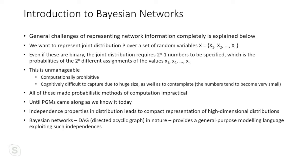The probabilities in a joint distribution must sum to one, so they become extremely small — practically, a human cannot distinguish between 0.000057 and 0.000519. If variables are independent, P(X₁, …, Xₙ) = P(X₁) · P(X₂) · … · P(Xₙ), which requires only n parameters instead of 2ⁿ. Bayesian networks are directed acyclic graphs that exploit such independences for compact representation.